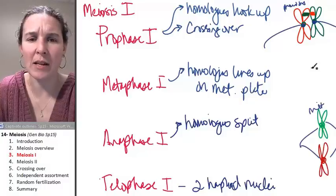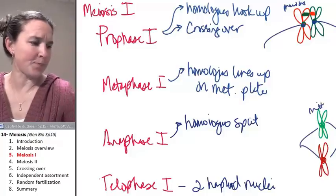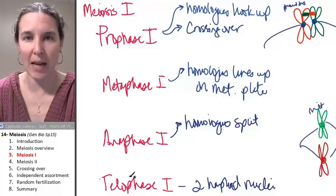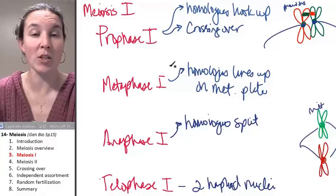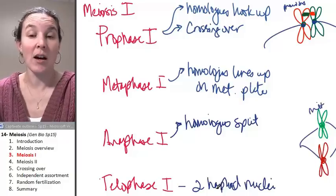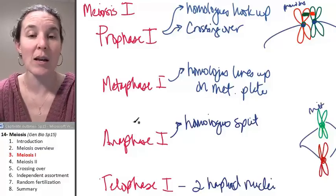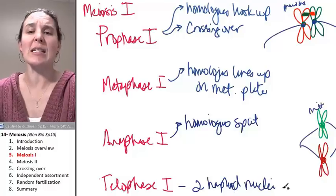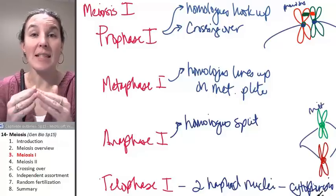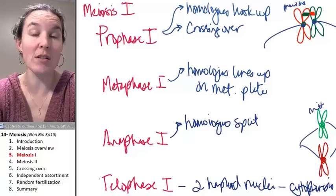Sometimes after meiosis I, we return to an interphase-type state before going into meiosis II. Sometimes we don't. Sometimes we don't even go through cytokinesis. Sometimes the nuclei just go through meiosis again. There are lots of different ways to do this. The bottom line is that now we've got two haploid nuclei. After cytokinesis, we've got two new cells and they're haploid. These two cells are both going to go through meiosis II.